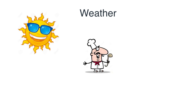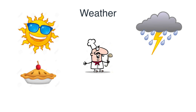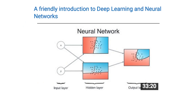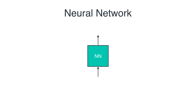If it's sunny, he cooks apple pie because he's happy. And if it's rainy, he cooks a burger. This scenario can be easily modeled by a very simple neural network. A neural network has an input and an output — if the input is a sunny day, the output is an apple pie; or if the input is a rainy day, then the output is a burger.